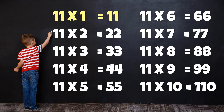Table of 11: 11×1=11, 11×2=22, 11×3=33, 11×4=44, 11×5=55, 11×6=66, 11×7=77, 11×8=88, 11×9=99, 11×10=110.